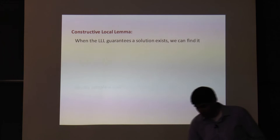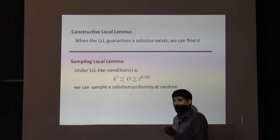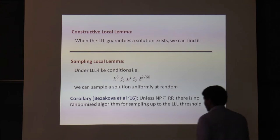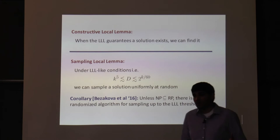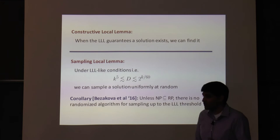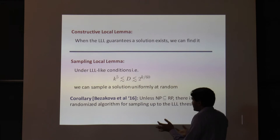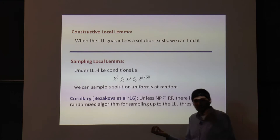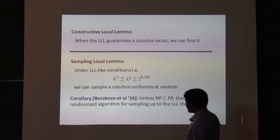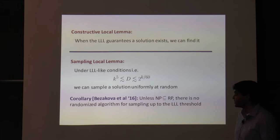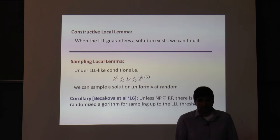What I'm really asking is: under local lemma conditions, can you not only find a satisfying assignment, but approximately sample from the uniform distribution on them, or approximately count how many there are? One interesting synergy between these fields is that we know you can't get all the way to the limit — at the threshold of 2^(k/2) the problem becomes NP-hard. So the Moser-Tardos algorithm is fundamentally biased in the solutions it finds because if it weren't, you could solve NP-hard problems.